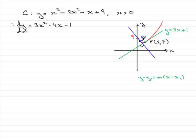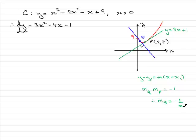We have to show that the x-coordinate of Q is one third bracket 2 plus root 6. The key background information is that the product of two perpendicular gradients is always minus 1. So if we have the gradient at Q multiplied by the gradient at P, it should equal minus 1. From this, the gradient of Q equals minus 1 over the gradient of P.